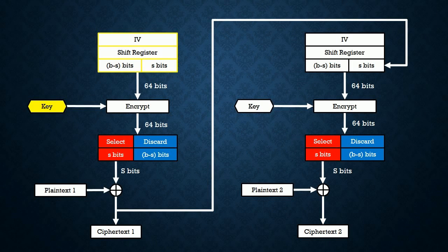Then, we will have a key. Both the initialization vector and key will be the input for the encryption. During the encryption, the key will be used to encrypt the initialization vector. The output of the encryption will consist of two parts. The leftmost S bits will be selected, while the remaining bits will be discarded.